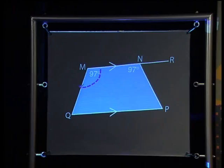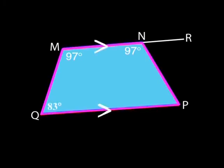M plus Q equals 180 degrees. Correct. So 97 plus Q must be 180. That makes Q equal to 83 degrees. So Q plus N must also be equal to 180 degrees. And that's all we need. MNPQ is cyclic because N and Q are supplementary.